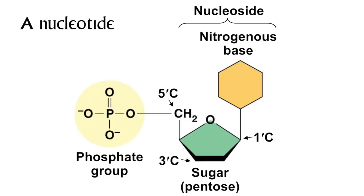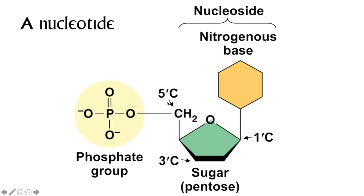Let's look at the three parts of a nucleotide. The orange hexagon here represents a nitrogenous base, which may have one or two rings and always contains nitrogen. The green part may remind you of glucose, but this is a pentagon — a 5-carbon sugar or pentose. Notice how the numbers on the pentose have prime symbols: one prime, three prime, five prime. The third part is the phosphate group, just like the functional group we saw in chapter 4.